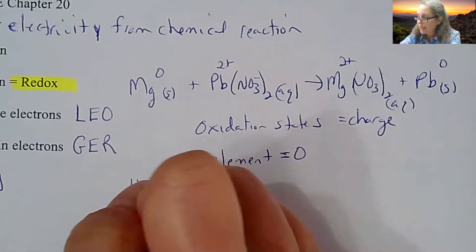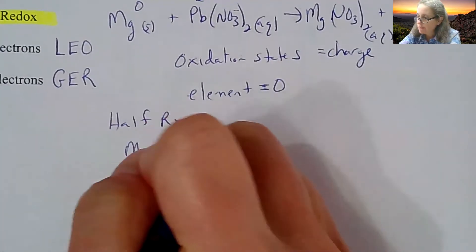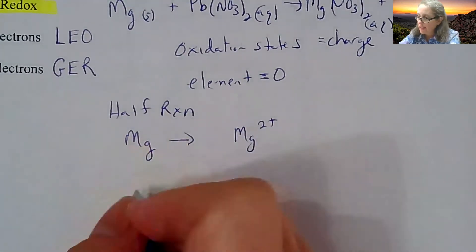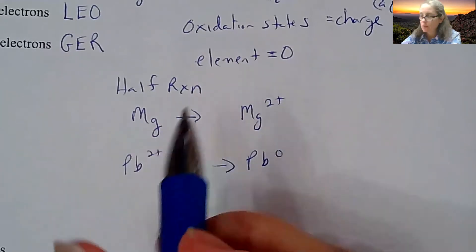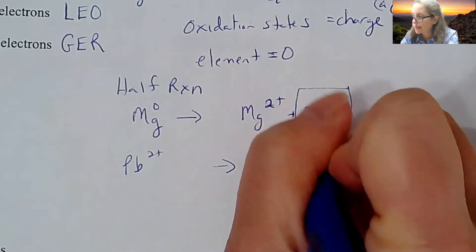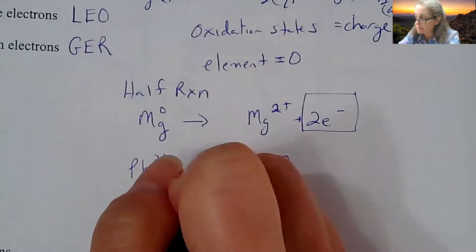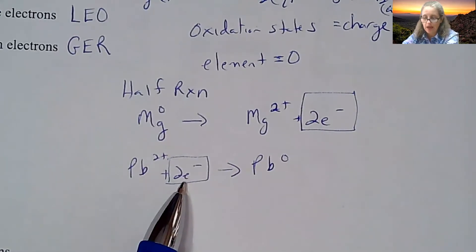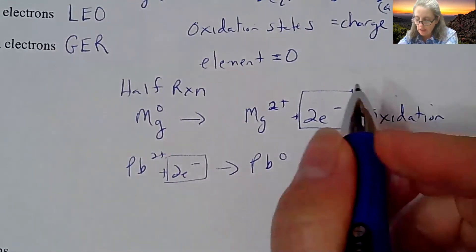We could write something called half reactions to show exactly who is gaining and who is losing electrons. If I look at magnesium, it's becoming magnesium 2+, and lead is going from 2+ to zero. Magnesium is going from zero to plus two, so it's losing two electrons—we write the electrons on the product side. Lead(II) ion is going to zero, so it must be gaining two electrons. We write the electrons on the reactant side. That means magnesium is undergoing oxidation and lead(II) is undergoing reduction.